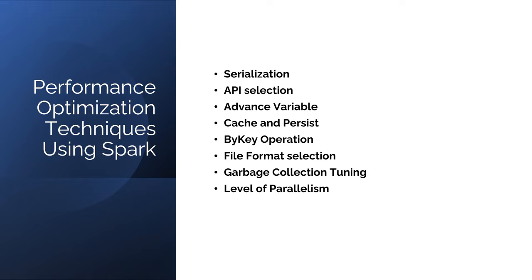There are different performance optimization techniques in Spark: serialization, API selection, advanced variables, cache and persist, by-key operations, file format selection, garbage collection tuning, and level of parallelism. Serialization plays an important role in distributed application performance. By default Spark uses Java serializer, but Spark can also use Kryo serializer for better performance — Kryo is in compact binary format and offers processing 10x faster than Java serializer.